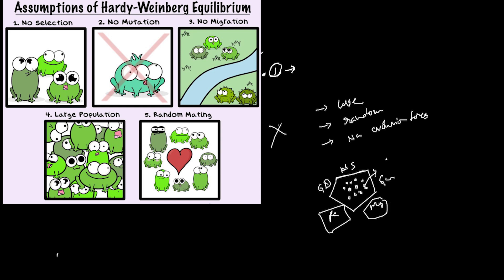There is also genetic drift. So there is a lot happening in a natural population. We have to talk about the evolution framework — that's what we call Hardy-Weinberg equilibrium.